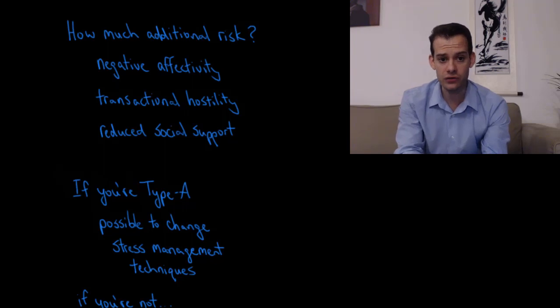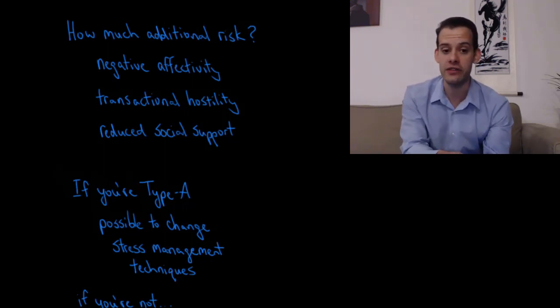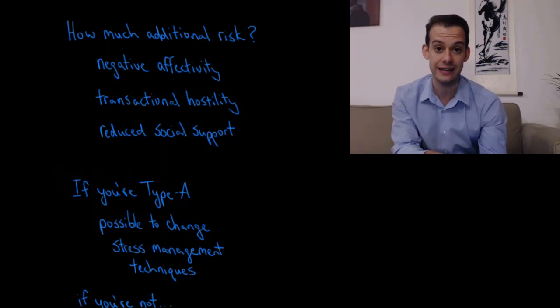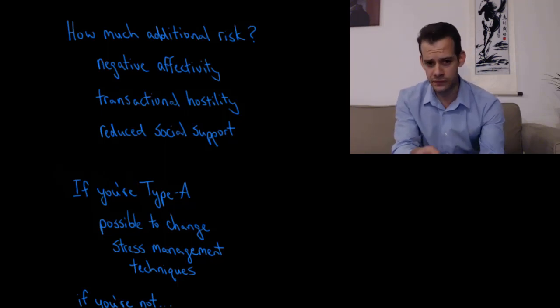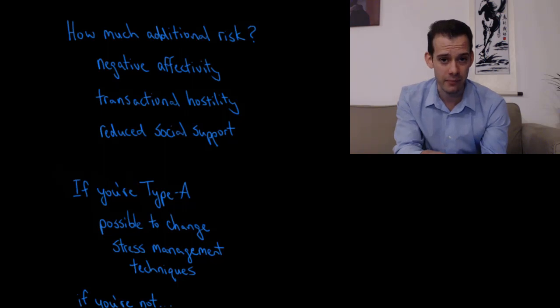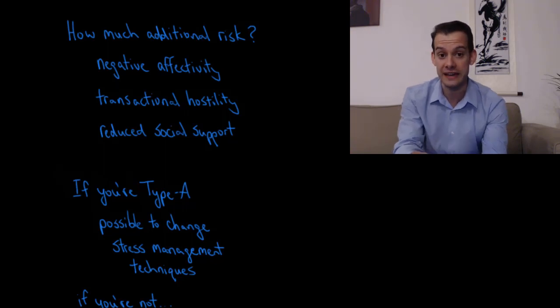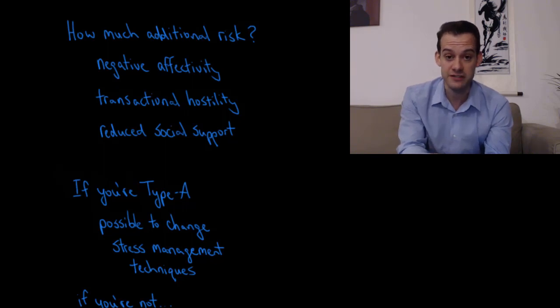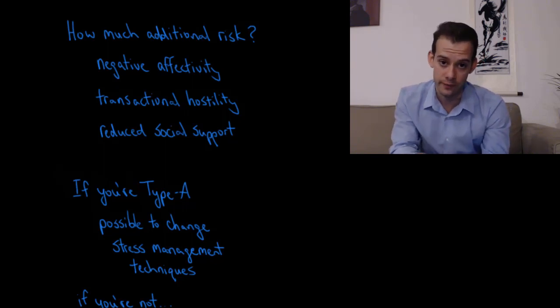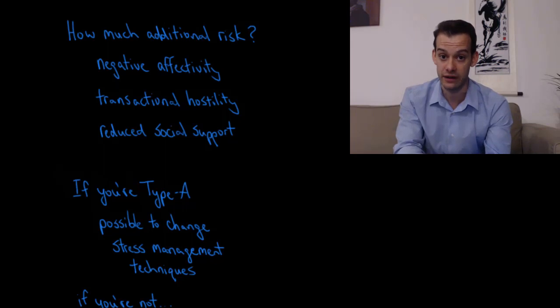But we also have what's called transactional hostility. And that is, they tend to be angry and hostile with others, and others tend to respond in kind. That's the transaction. And so this means that other people might not like them very much, and they might reduce the social support that they're willing to offer this person when the person is under stress. And we'll see in a future video that there's a clear relationship between stress management and social support. So this could also be playing a role in this risk.